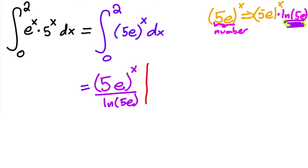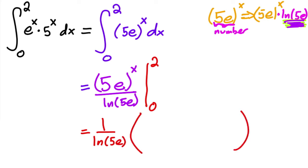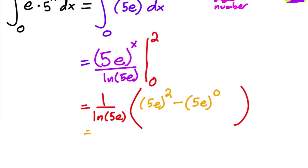Go ahead and test that out — find its derivative and you'll see it's exactly correct. Writing it as one over natural log of five e on the outside, we plug in the bounds: five e squared minus five e to the zero. This equals 25e squared minus one, all over natural log of five e.